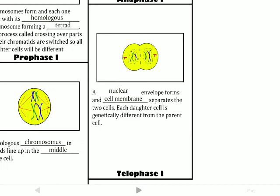Then we have telophase 1, where a new nuclear envelope starts to form and a new cell membrane forms right down the middle. The red things left over are the centrioles — that's what forms the spindle fibers. So these are our two haploid cells produced. Notice they have two chromosomes each — originally we had four — so they're haploid because they have a half set of chromosomes.